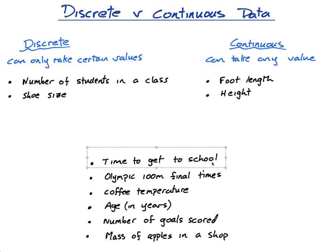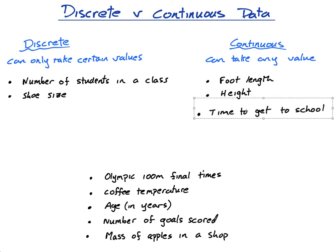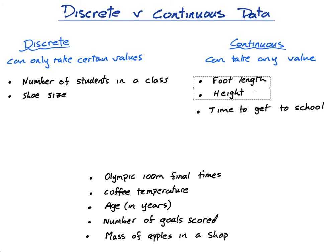Time to get to school — how long does it take you? That's continuous because time is continuous. Now, if it said time rounded to the nearest minute, then that's discrete — it's either 5, 6, 10, 20, or 21 minutes. But if it's just time, there's always that little difference; it's never exactly 10 minutes.